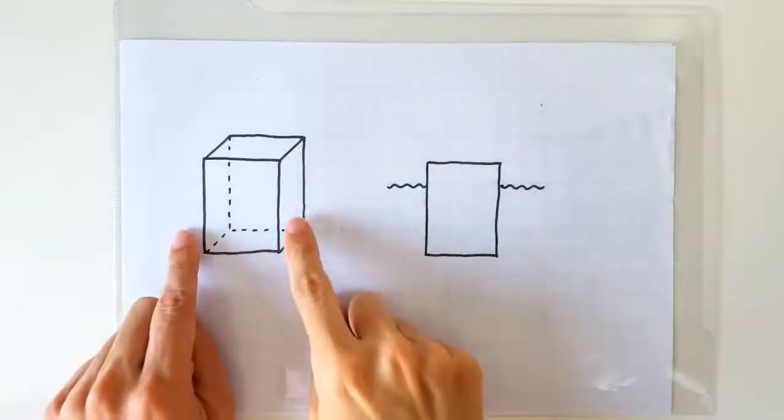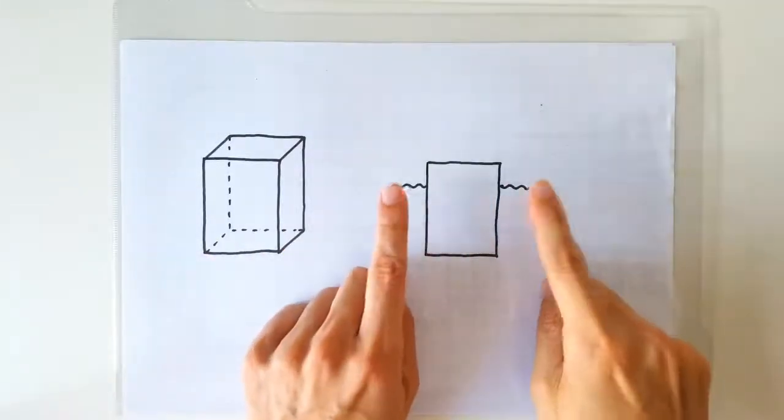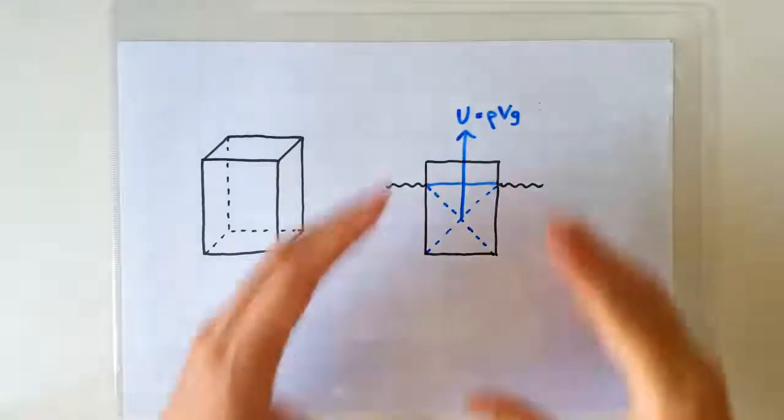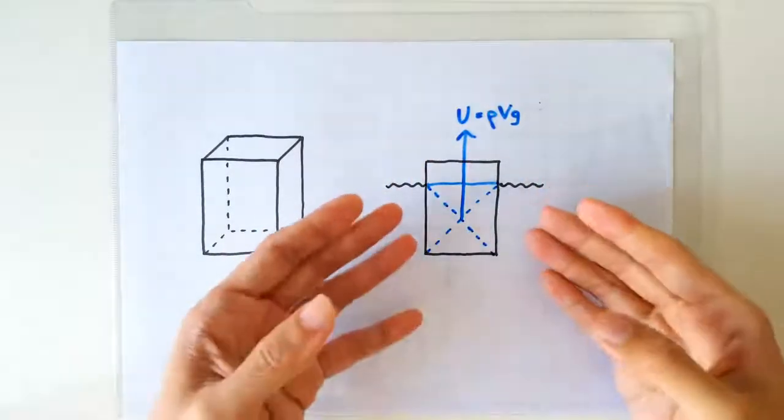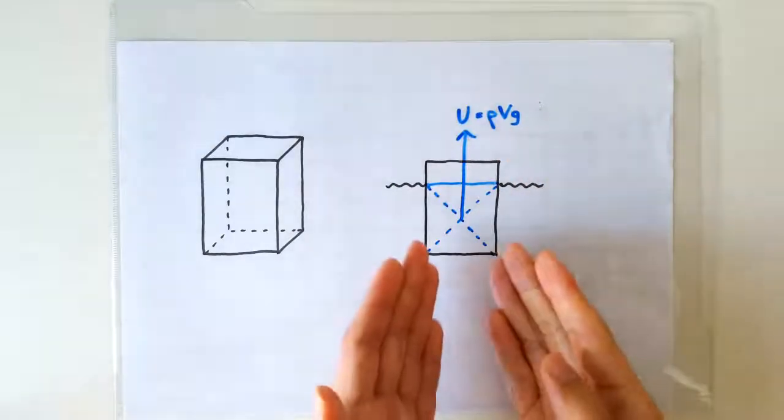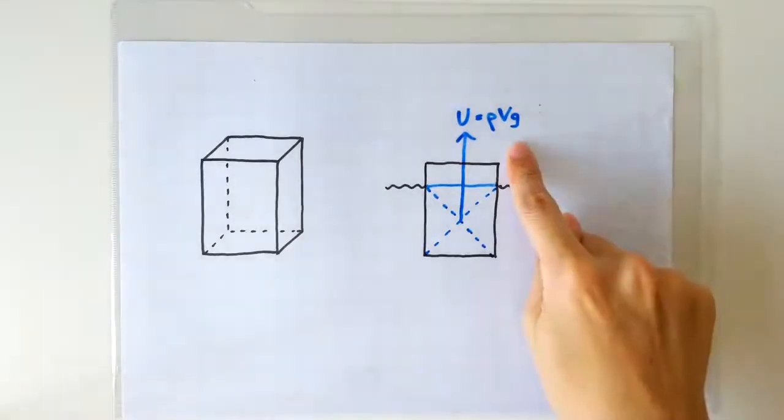Hello, we have a cuboid that we're going to float in water. The surrounding water is going to exert an uptrust of ρVg on the cuboid. Can you prove this formula?